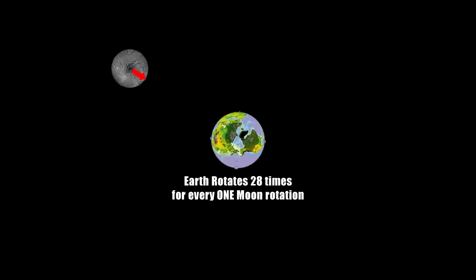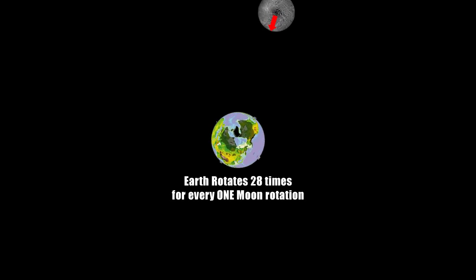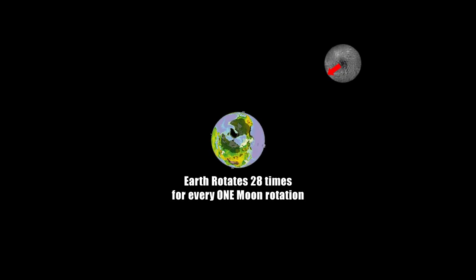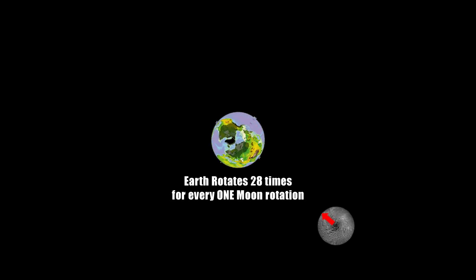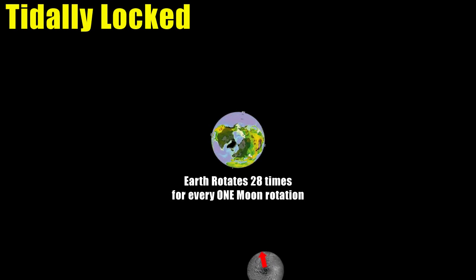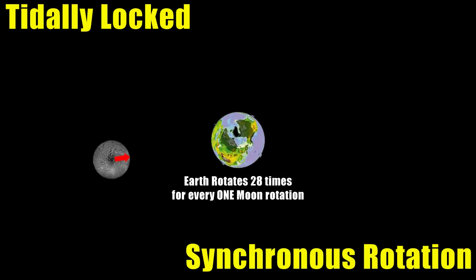The moon completes a full orbit of the earth about every 28 days. In that 28 days, the moon will rotate on its axis once. The fact that the moon's face is always facing the earth is tidal locking and the action of the moon's movement compared to the earth is synchronous rotation.